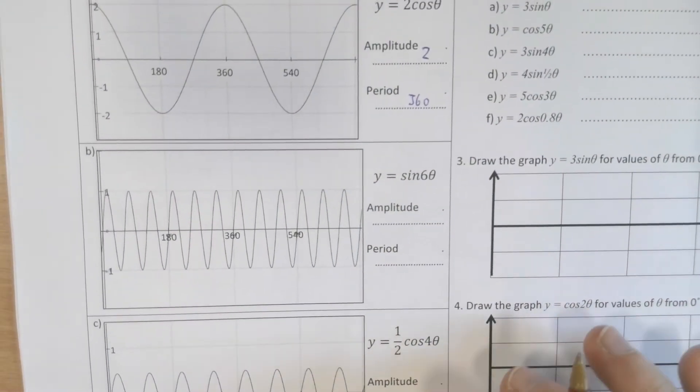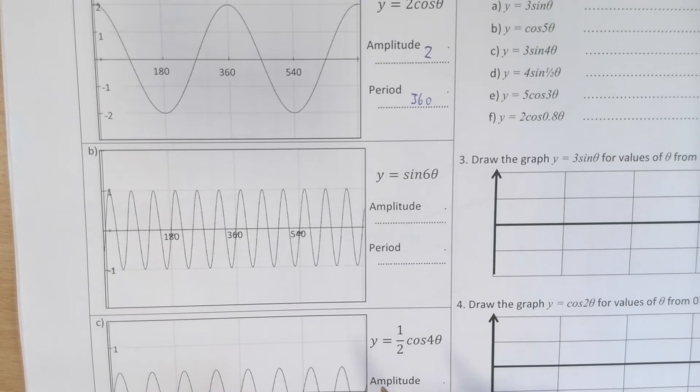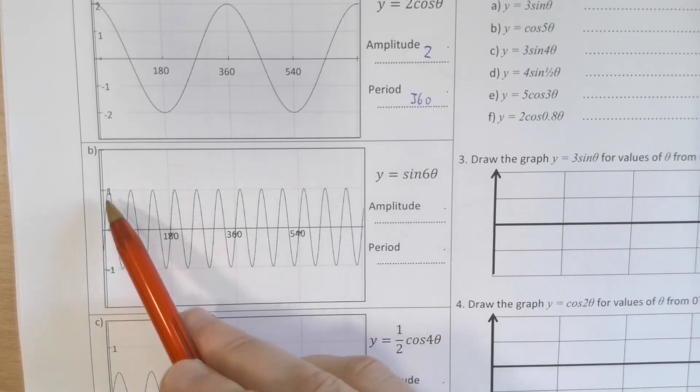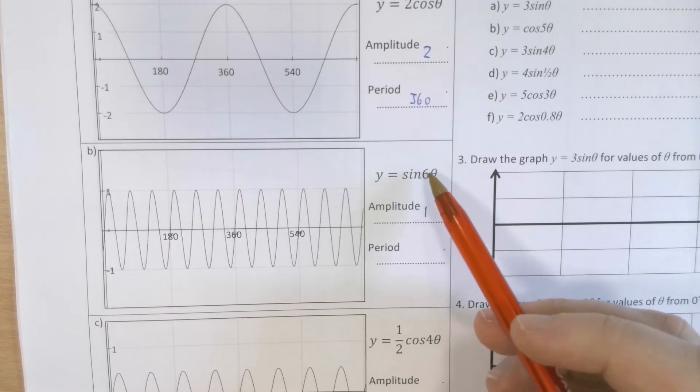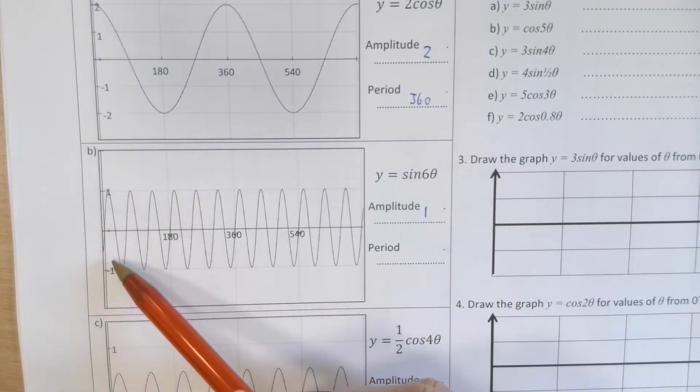The one below, sine of 6θ, well, amplitude goes up to 1 still. Period, well, there are two ways we can look at this. We can either count 1, 2, 3, 4,